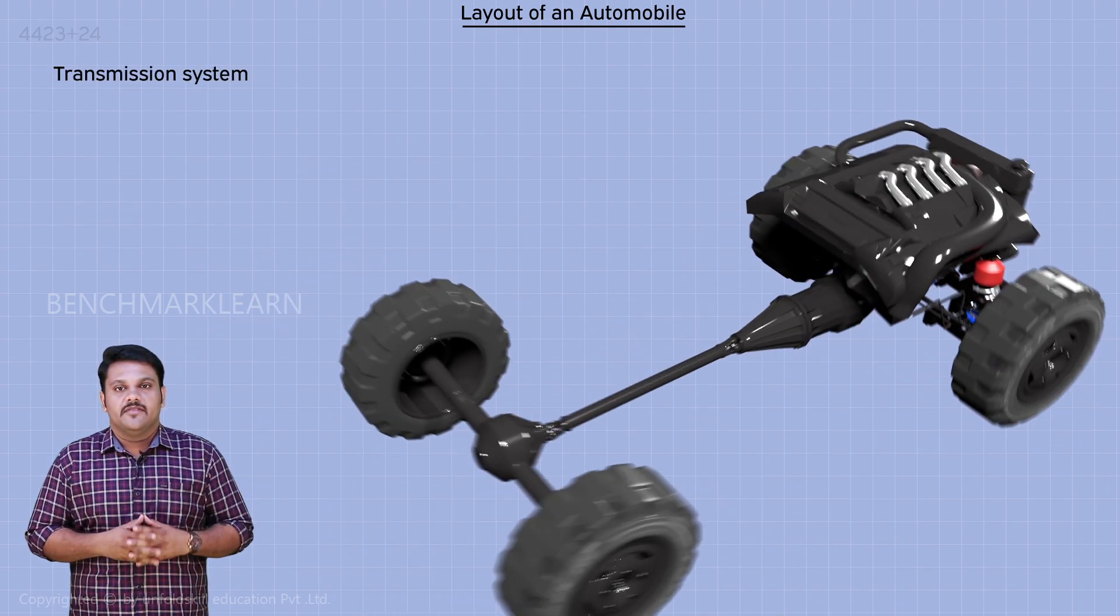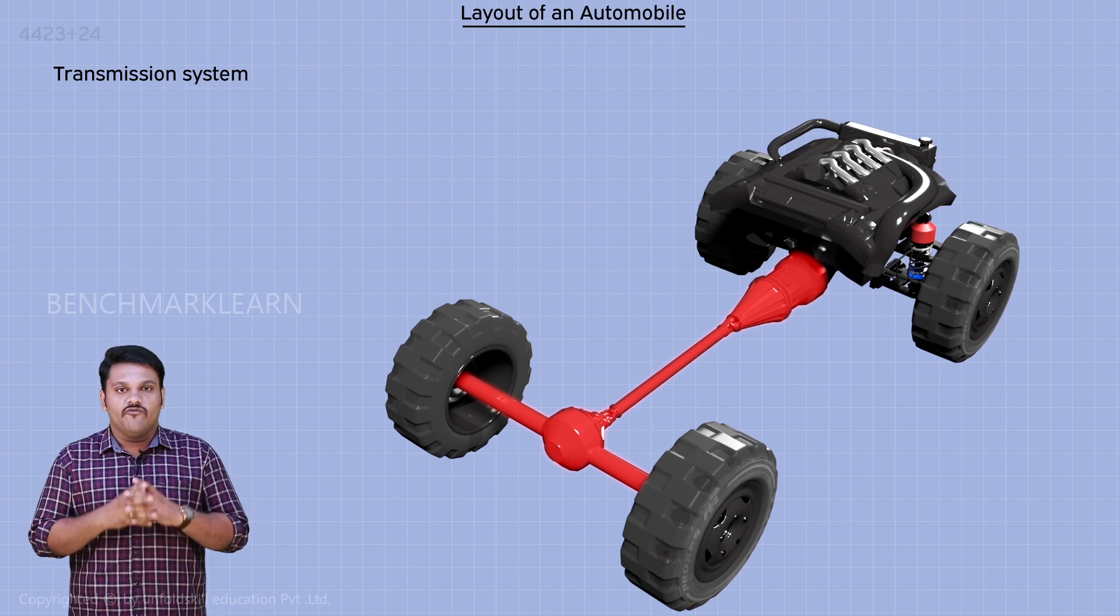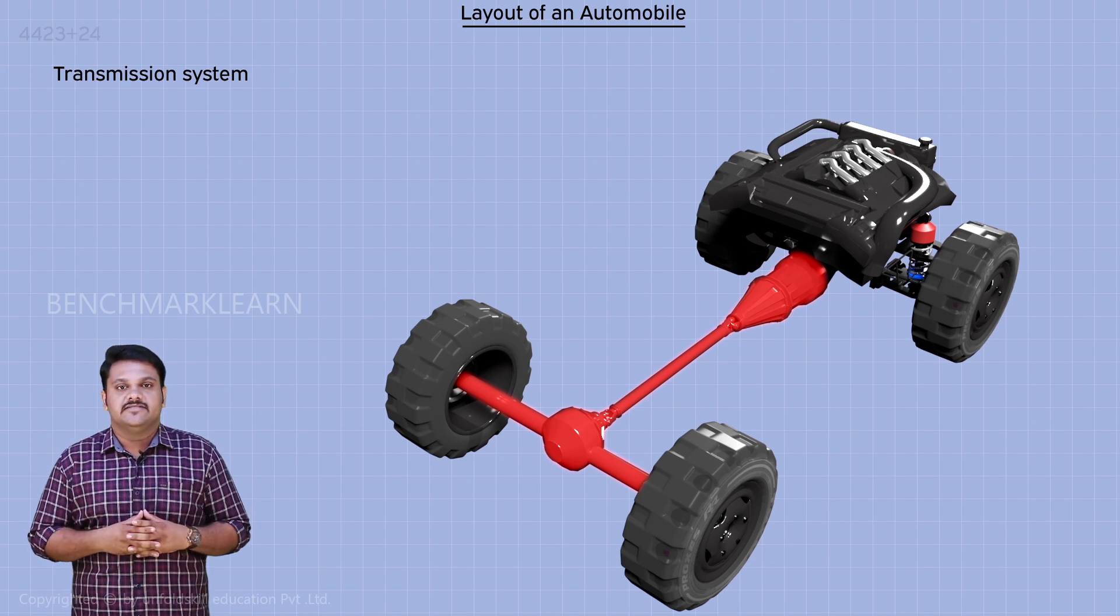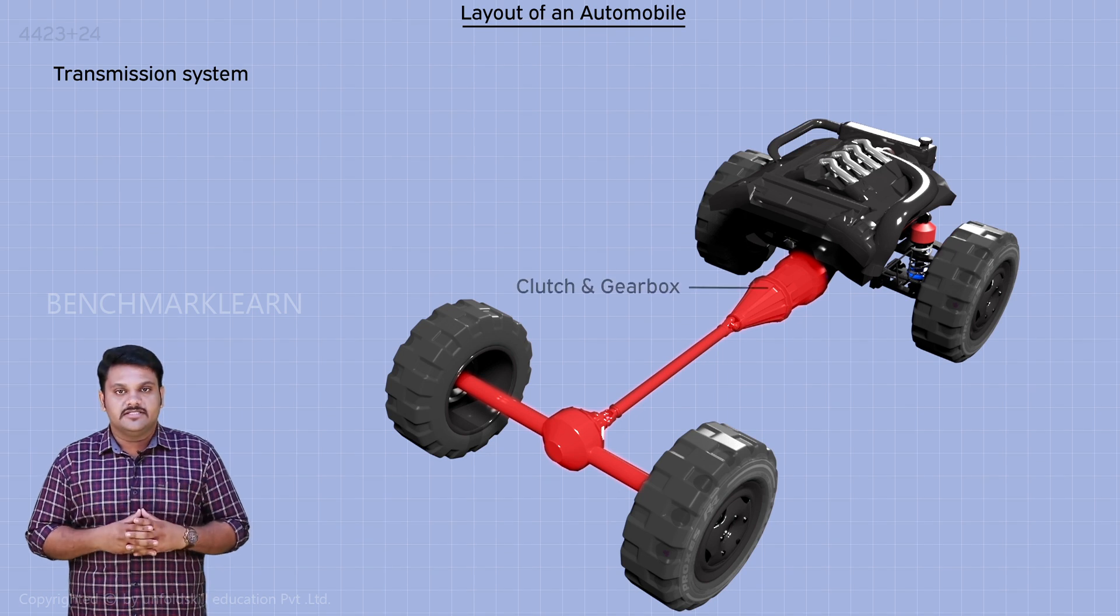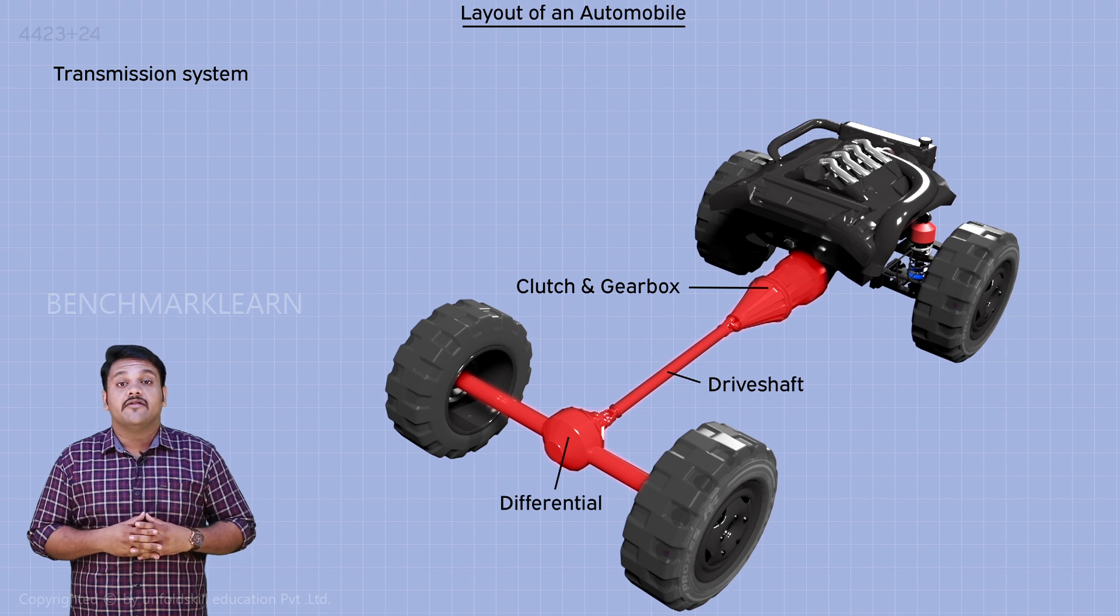Transmission system. Transmission system is a series of components through which the power from the engine reaches the wheels. It consists of clutch, gearbox, drive shaft, differential, and rear axle.